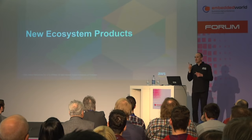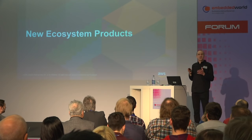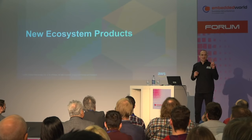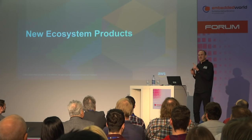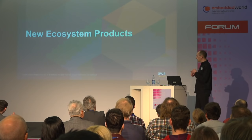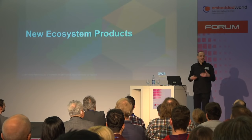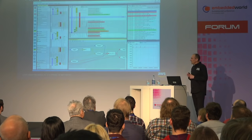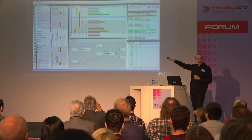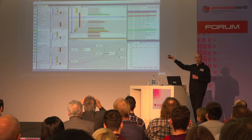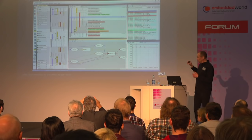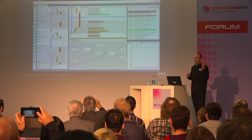Moving on to the ecosystem products. One of the really great things about FreeRTOS is the wealth of the ecosystem that's built up over the years. I'm going to highlight two products here. The first one you may be familiar with is Percepio. They provide a really nice trace tool for FreeRTOS that gives you a very detailed view of everything going on in your system — which tasks are running, which APIs are called, that kind of thing. It's been around for a few years.